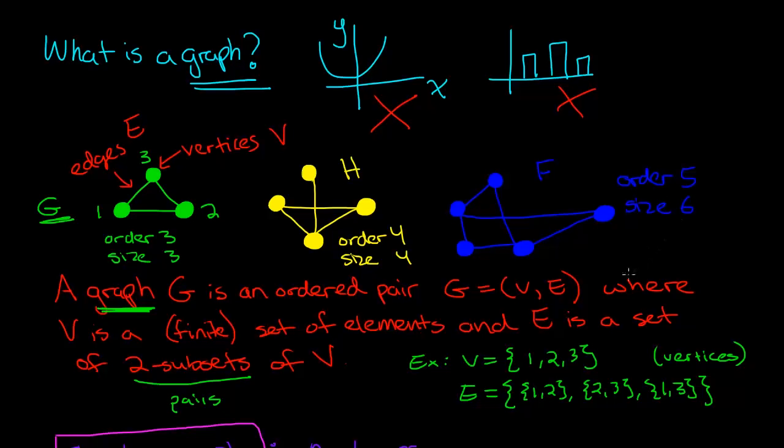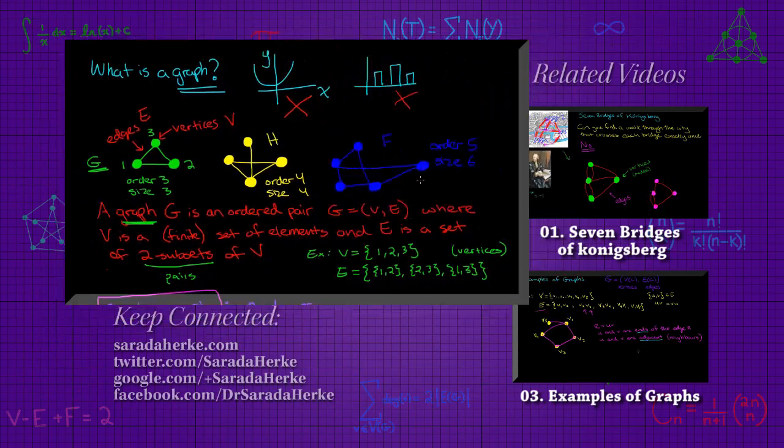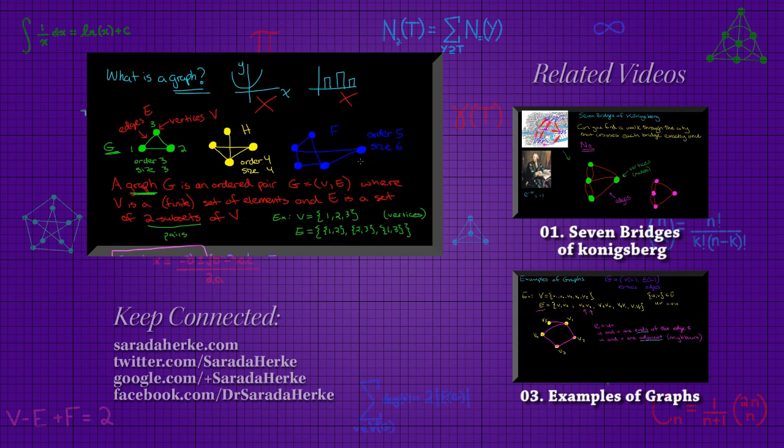So that's the basic idea of what a graph is, what its order is, what its size is, and the fact that we don't really worry about loops or multiple edges or directions, at least not for now. So hopefully you have a complete understanding of what is a graph now. See you next time.